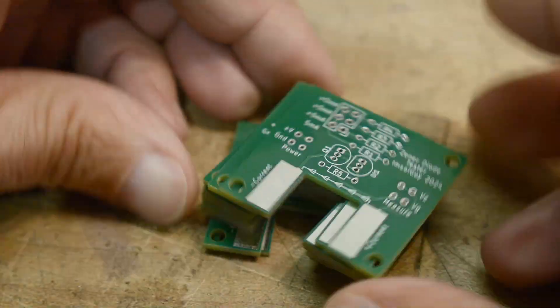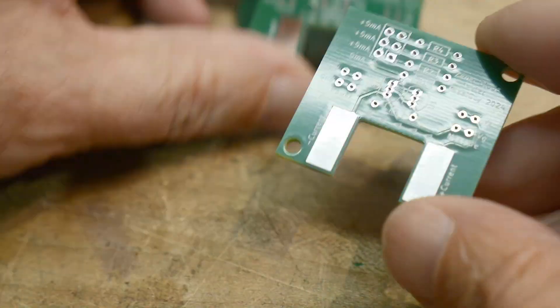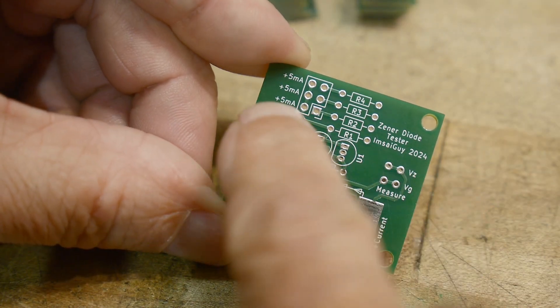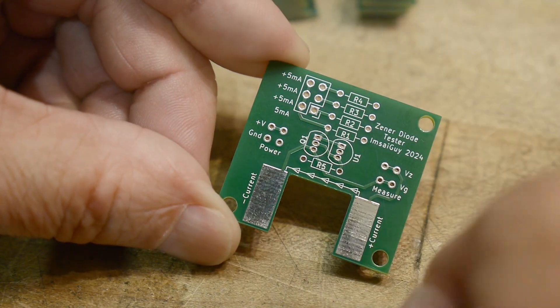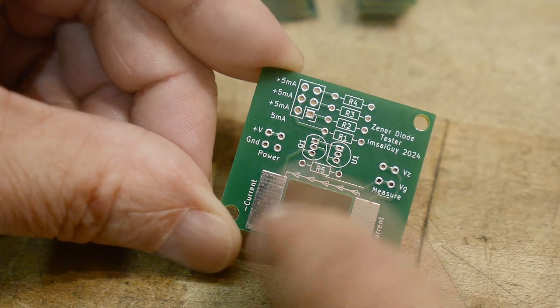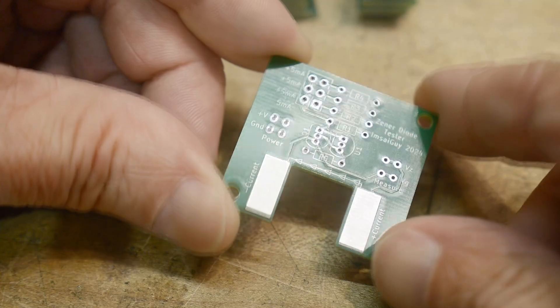All right, so these boards are a current source, and it's programmable, so you can have 5, 10, 15, 20 milliamps with a little jumper area there. And yeah, so what are these two weird pads here for?